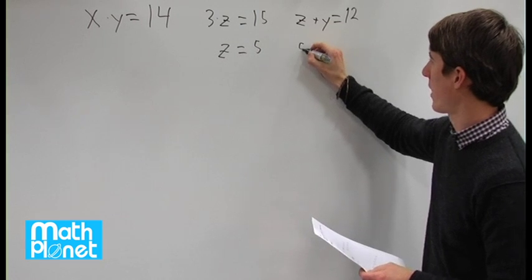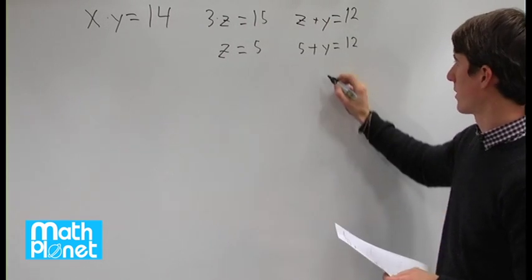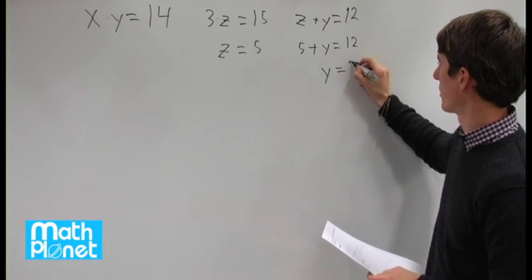Let's try this one, 5 plus y equals 12. Subtract 5 from both sides gives us y is equal to 7.